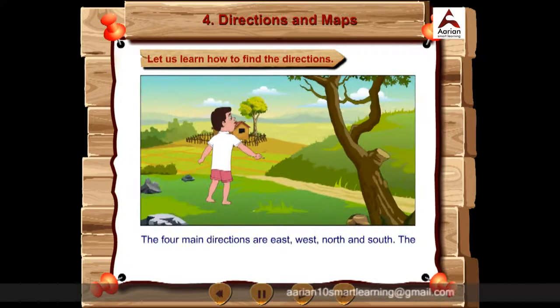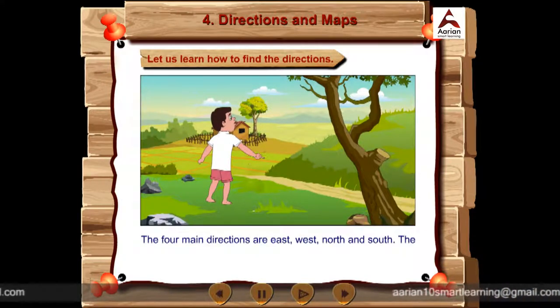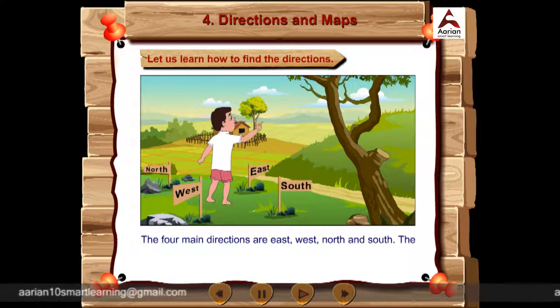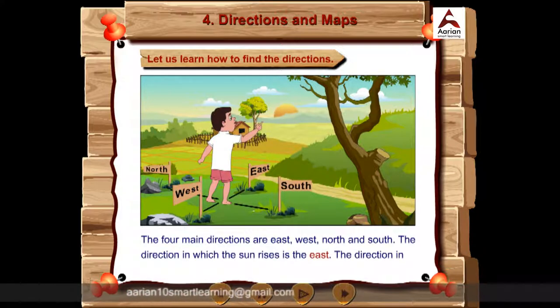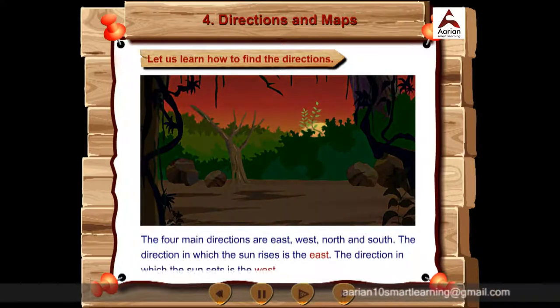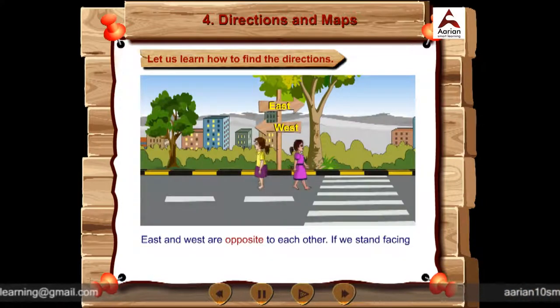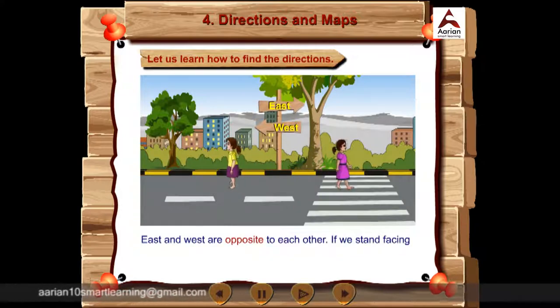The four main directions are east, west, north and south. The direction in which the sun rises is the east. The direction in which the sun sets is the west. East and west are opposite to each other.